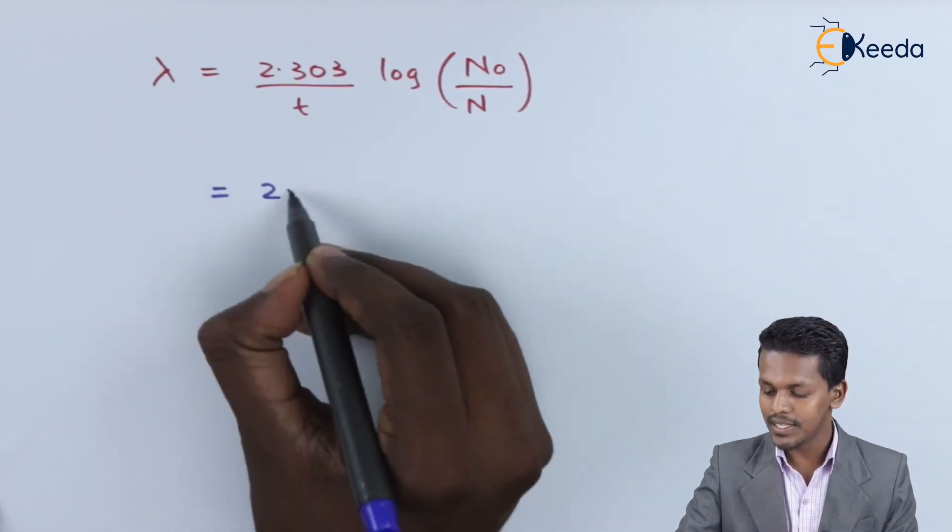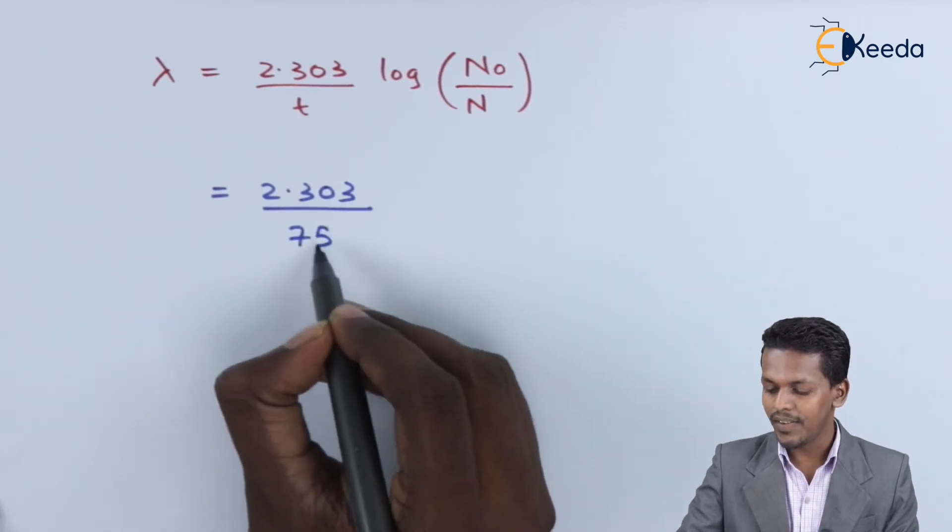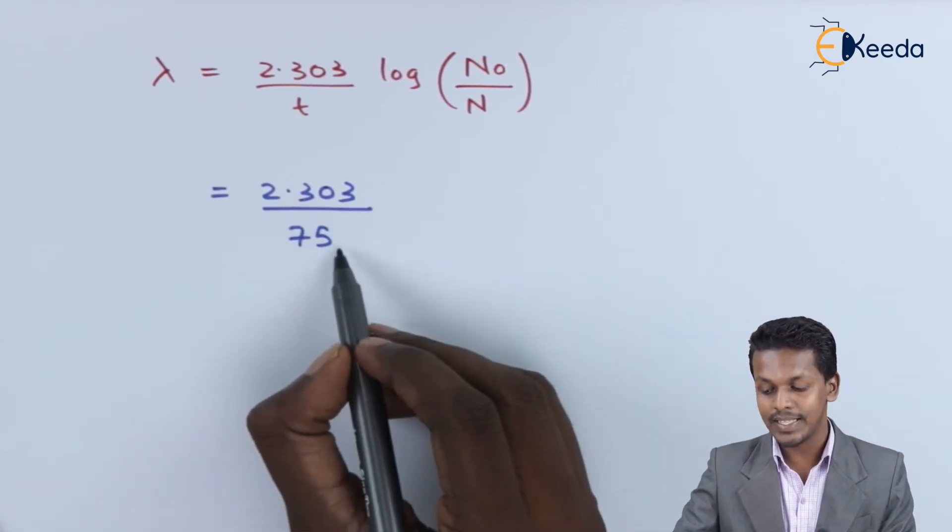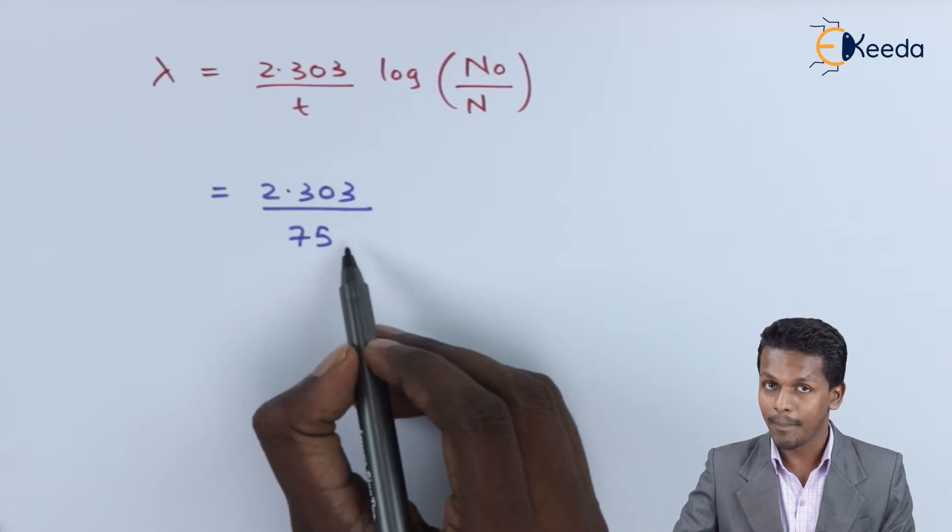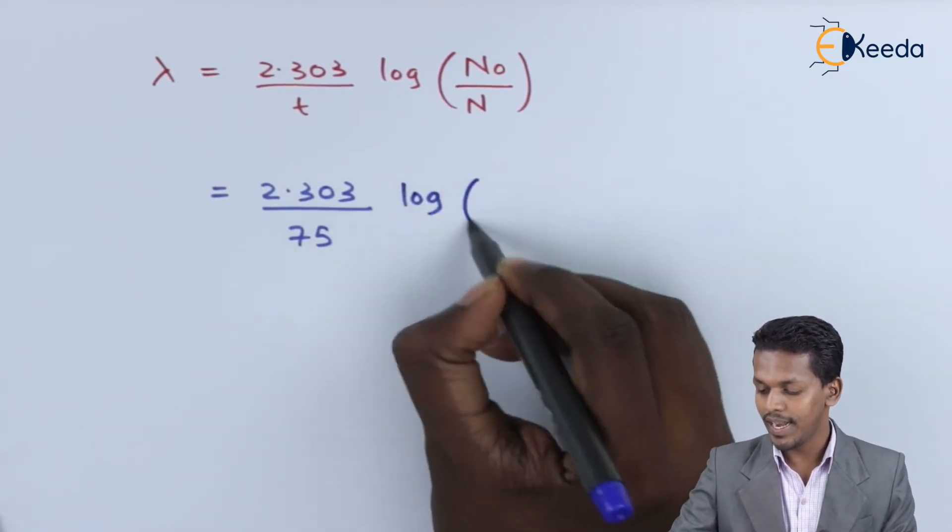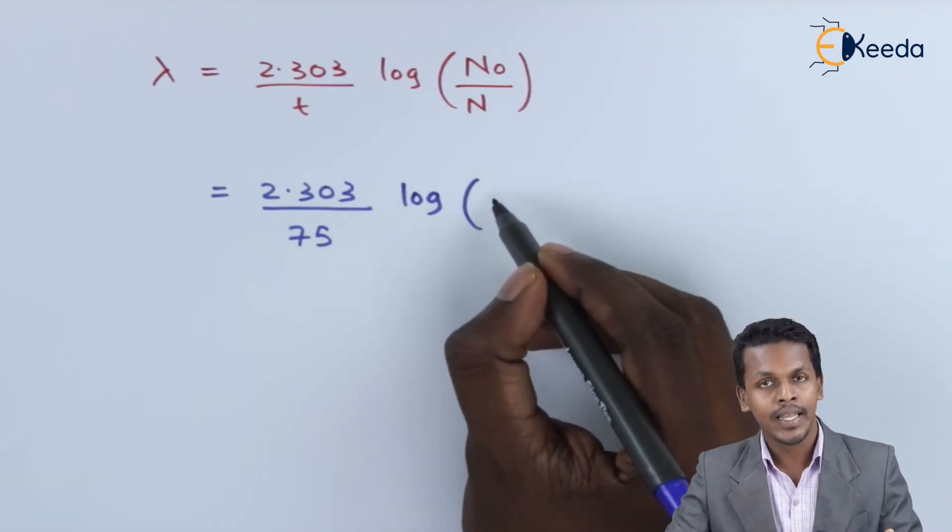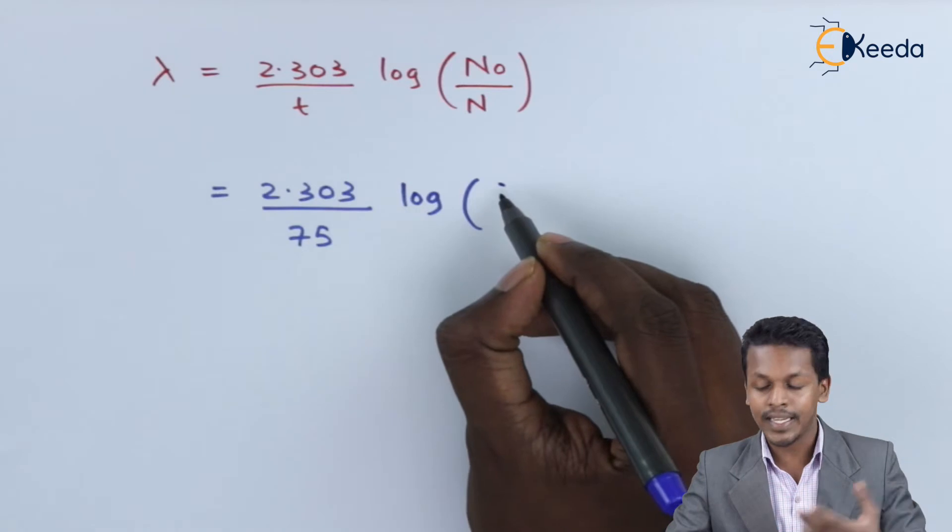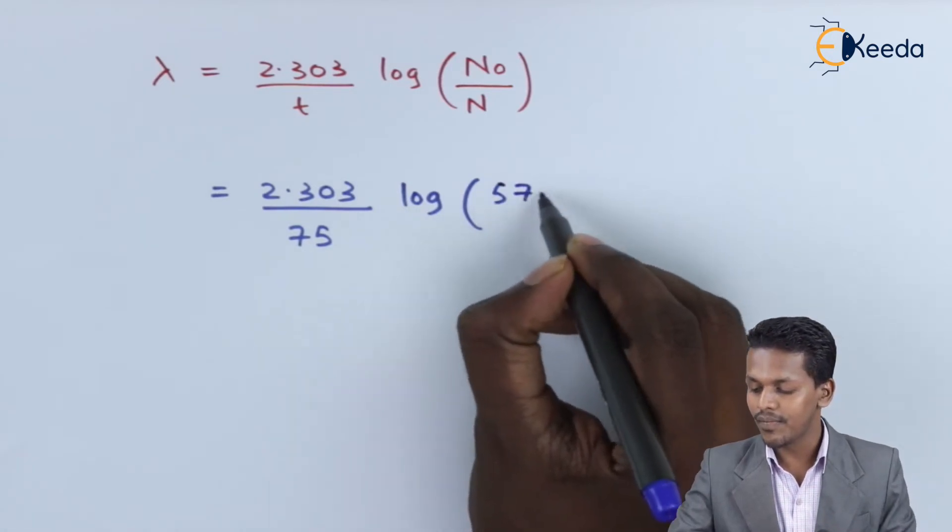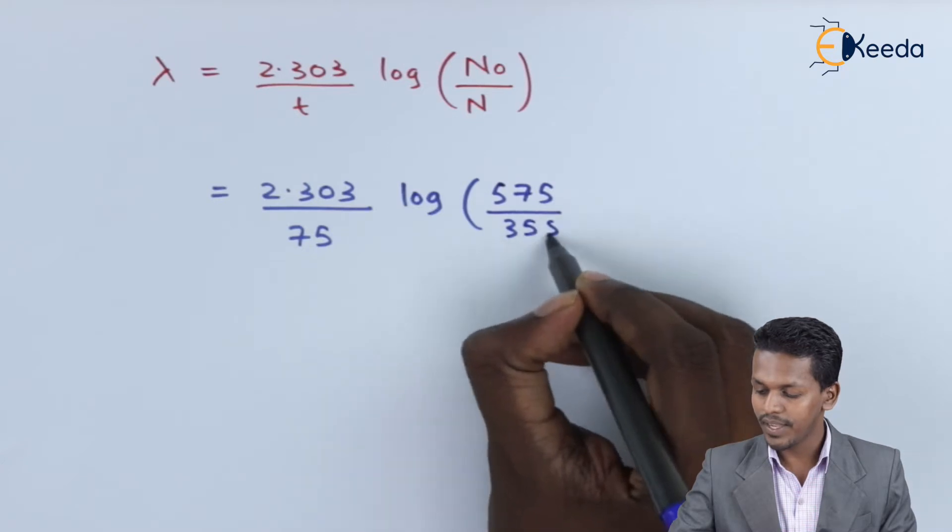Therefore we have: (2.303/75) × log(575/358). We should make sure this 75 has units of minutes. This is the value of the decay constant we'll get, and the unit will be minute⁻¹ since time is in minutes.